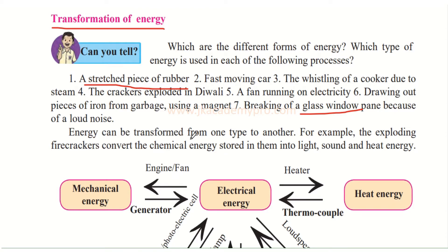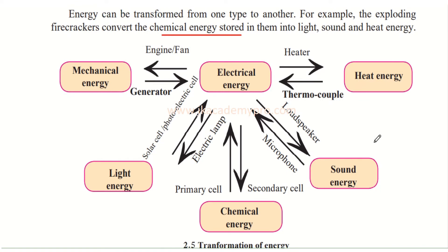Energy can be transformed from one type to another. In all these examples, one type of energy is being transferred and converted to another form. For example, the exploding of fire crackers converts the chemical energy stored in them into light, sound, and heat energy. When you apply fire to crackers, the chemical energy gets transformed into light, sound, and heat — that is what causes the crackers to burst. This shows how one form of energy can be converted into other forms.